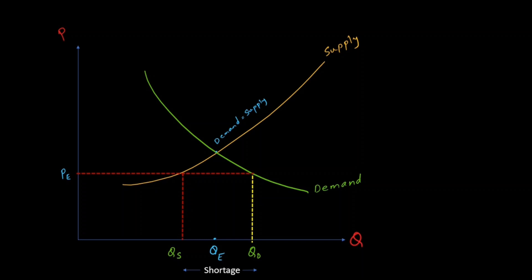At the same time, whenever there is a general price increase in the market, the law of demand says that the quantity demanded decreases, so QD starts decreasing. So when the price increases, two things happen: quantity demanded decreases and quantity supplied increases. This continues until the quantity supplied equals the quantity demanded and they settle at an equilibrium price. And this is how market equilibrium is again restored.